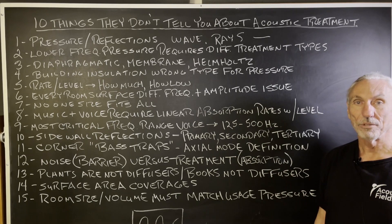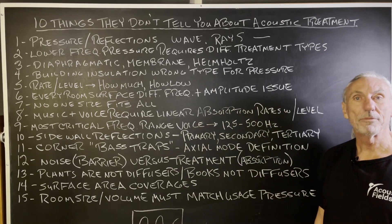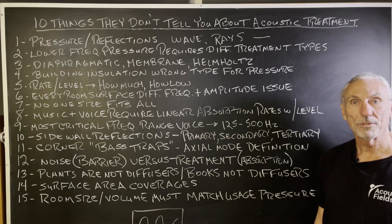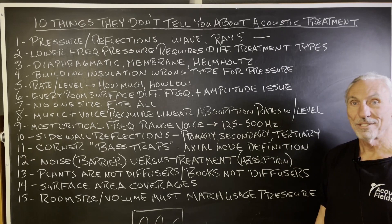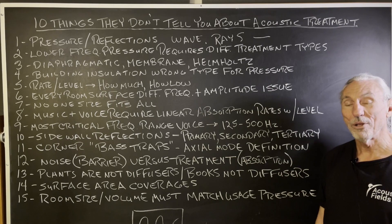Building insulation is the wrong type of treatment for pressure. You can't use building insulation to absorb low frequency energy. Many companies will tell you that it works — it does not. It shouldn't even be in the business; it's toxic to work with. It's not really a low frequency sound absorption treatment type — it's more of a limp mass material type. Limp mass material types can absorb low frequency energy by definition, by our laws of physics.